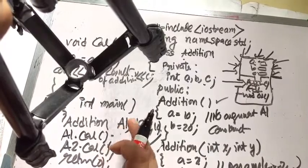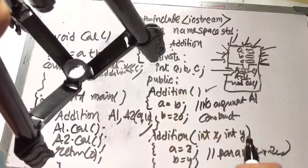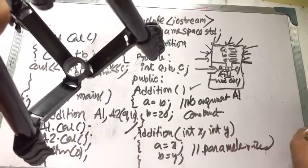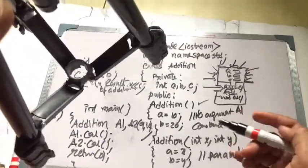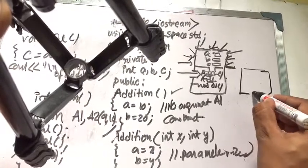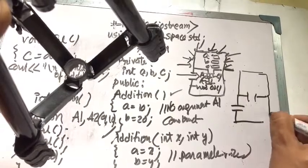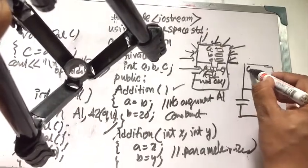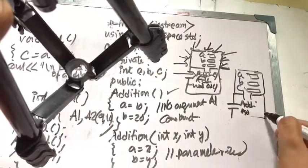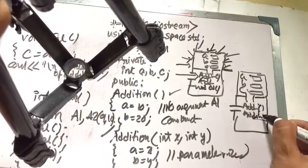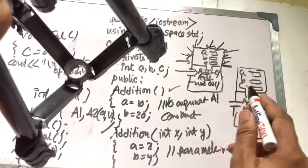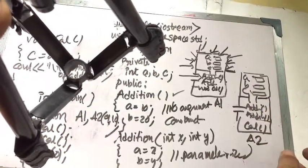Once a class has been created, we can create many objects: a1, a2, a3, and so on. There is another object a2 with its own private section (a, b, c) and public section with the two addition constructors and the cal function.